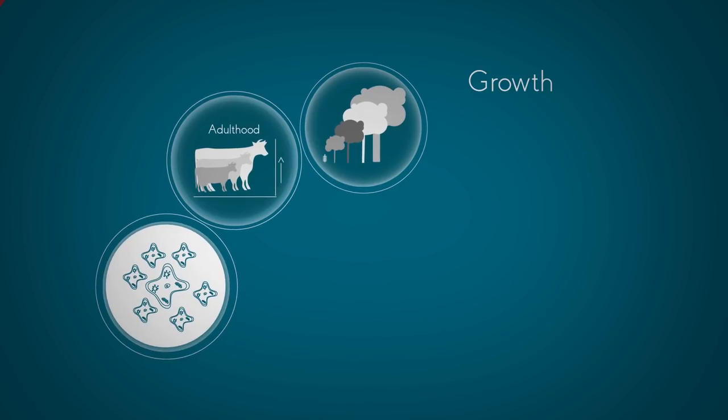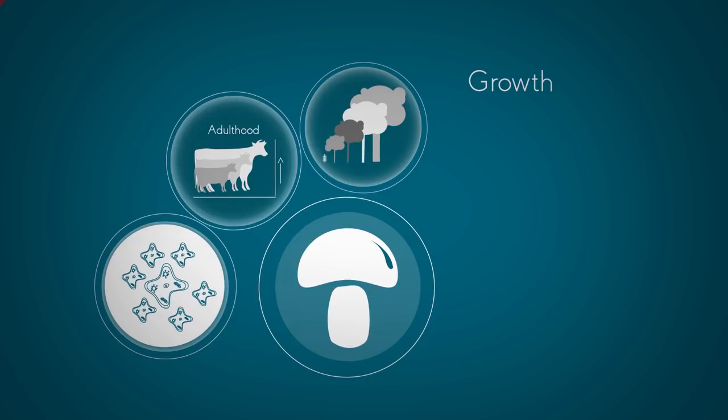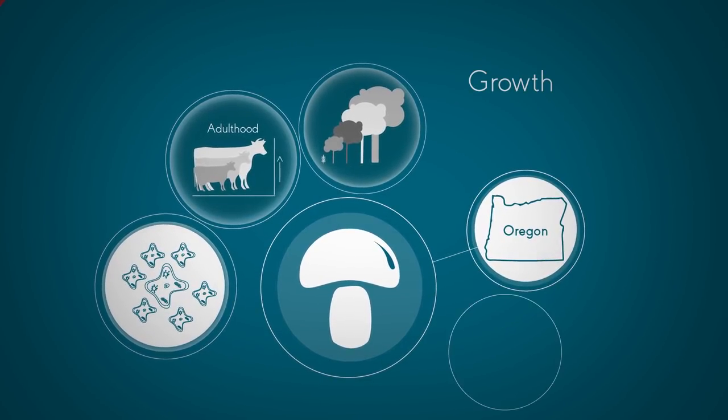In fact, the biggest living organism on the planet isn't a plant, it's a fungus. It's a type of honey fungus growing in Oregon, and is thought to be 2.4 miles across.